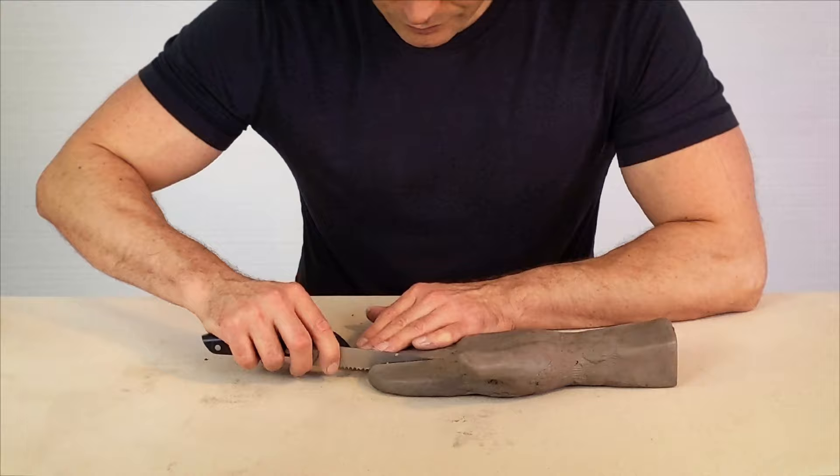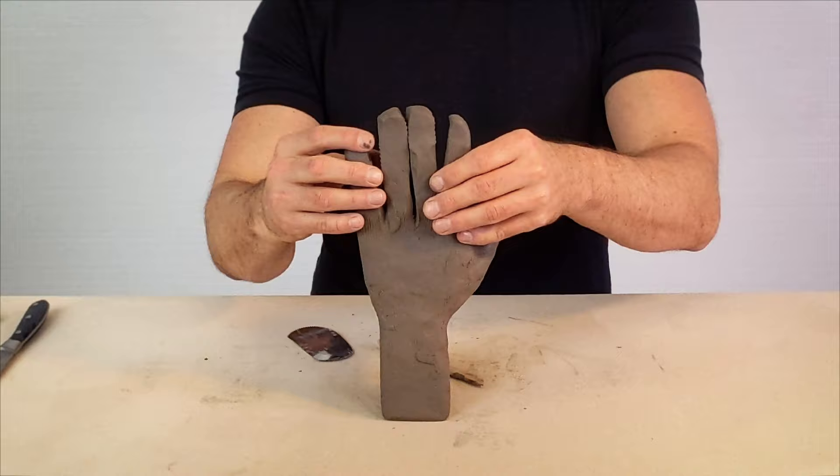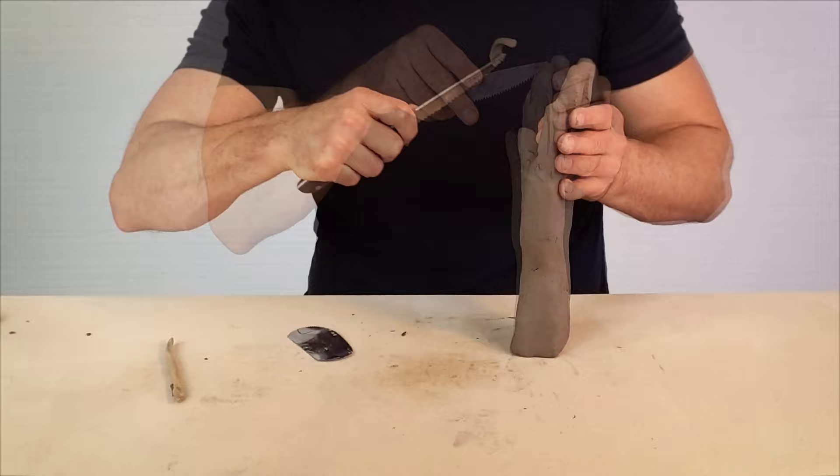Separate out the fingers, cutting just shy of all the way to the base of the finger section. This will make the attachment to the palm section stronger and minimize the likelihood of the fingers falling off as you shape them. At first, the fingers will look like terrifying sausages. Don't be alarmed, this will soon change.